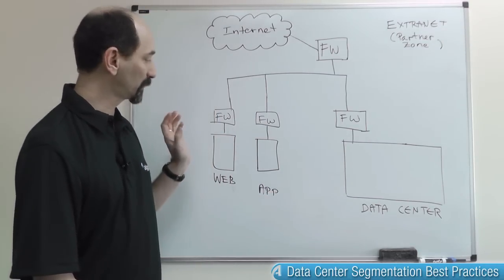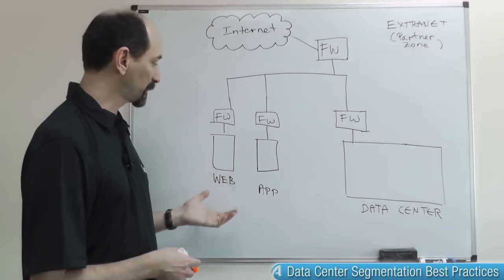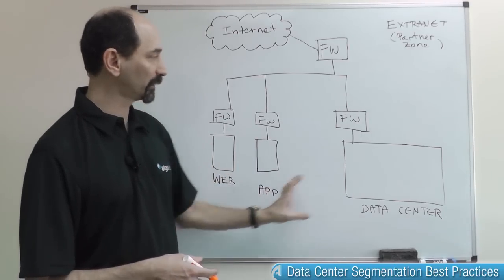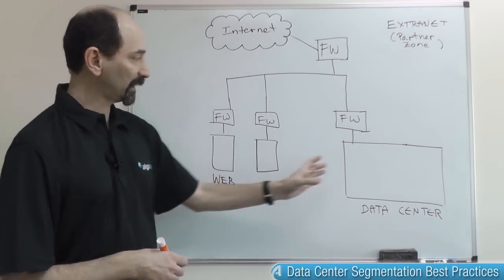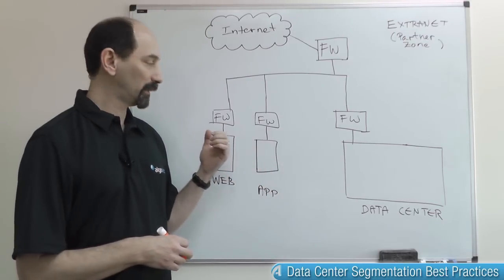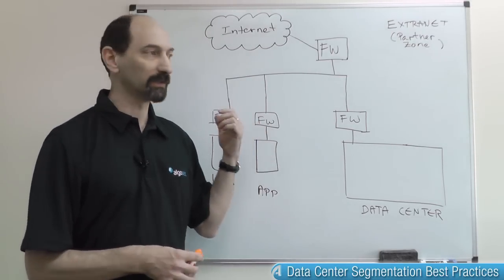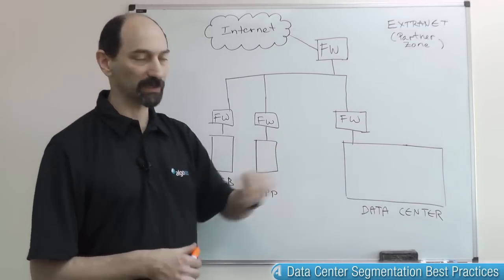Suppose you have your internet connection and you have a shopping application on your website, so you have a web front, you have an application zone, and then you have a data center sitting behind all those. And the data center includes where you would put the shopping cart information, credit card information from customer purchases and so on. So that's all in the data center.